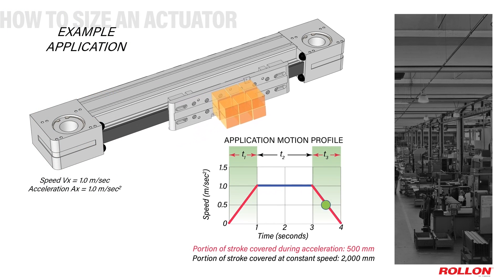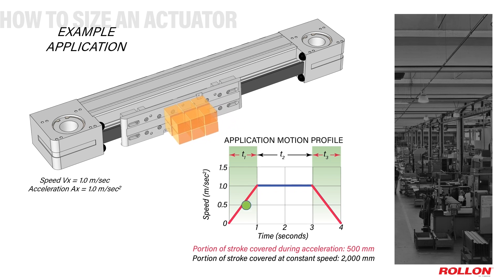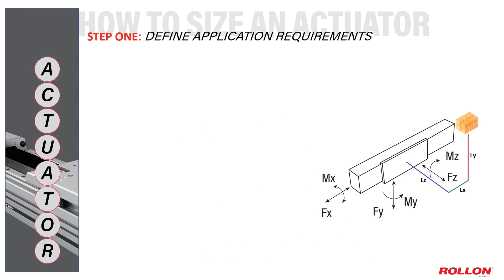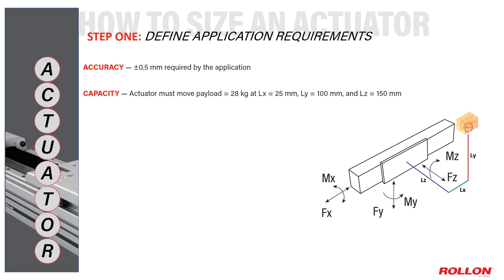Now let's work through a specific example of sizing a belt-driven actuator with these characteristics. The first step is to define all application parameters. Let's assume we need accuracy to within plus or minus 0.5 millimeters. The actuator must bear and transport a payload of 28 kilograms, and that payload volume is 25 by 100 by 150 millimeters. The actuator must move this load over a stroke of 3 meters for more than a million cycles per year — 1,051,200 cycles to be exact.